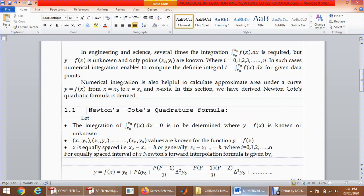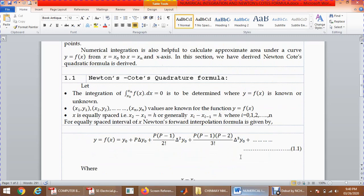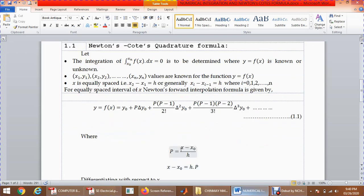For an equally spaced interval of x, we can write Newton's forward interpolation formula given by y = f(x) = y0 + p∆y0 + p(p-1)/2! ∆²y0 + ..., this is your first equation where p = (x - x0)/h, where h is the spacing and x0 is the initial value.